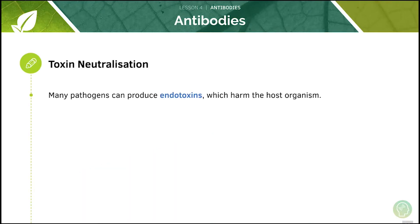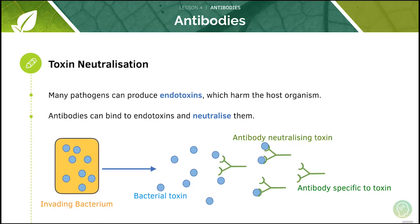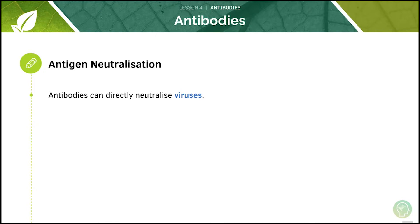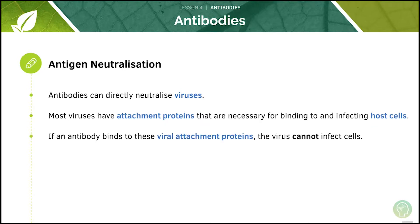Now let's look at toxin neutralization. Many pathogens produce endotoxins which harm the host organism. The antibodies can bind to these endotoxins and neutralize them. Additionally, antibodies can directly neutralize viruses. Most viruses have an attachment protein that's necessary for binding to and infecting the host's cells. If an antibody binds to these viral attachment proteins, the virus is unable to infect the host cells.